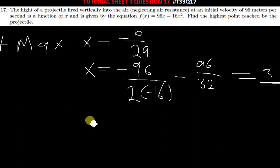So this function is the one that is showing us the height of the projectile. And at maximum, the value of X is equal to 3. So now what is the maximum point reached? We're going to find F(3). F(3) is what will give us the maximum height or the highest point reached by the projectile. So F(3) will be 96 times 3 minus 16 times 3 squared.